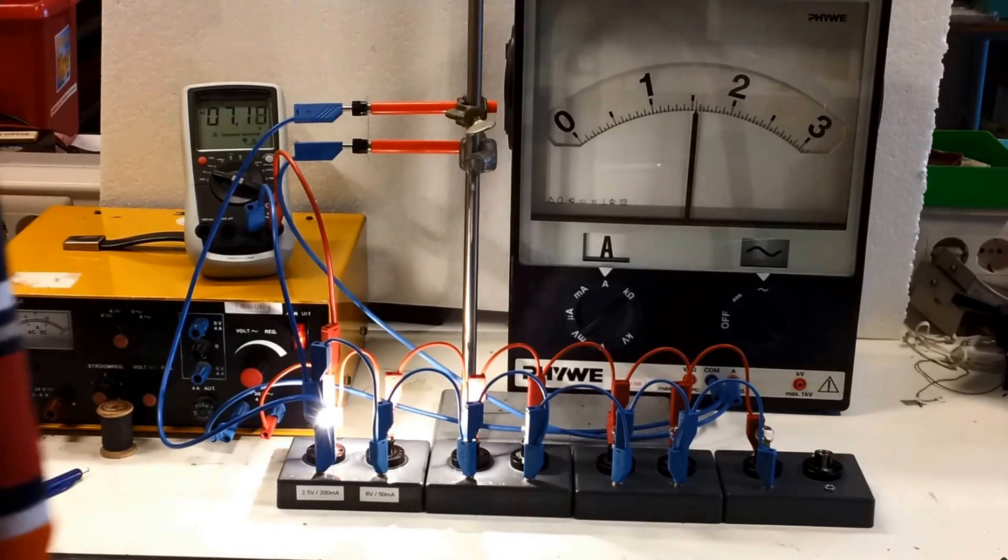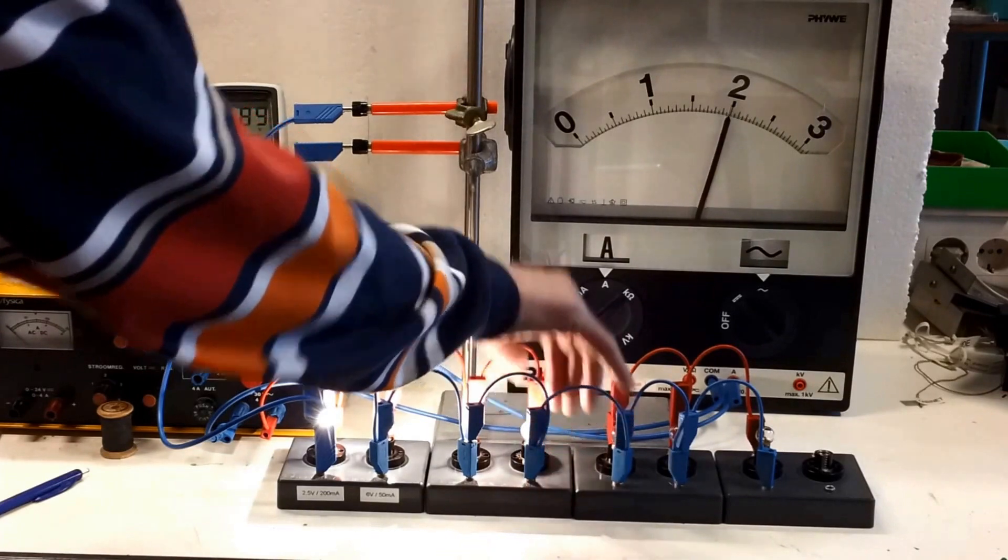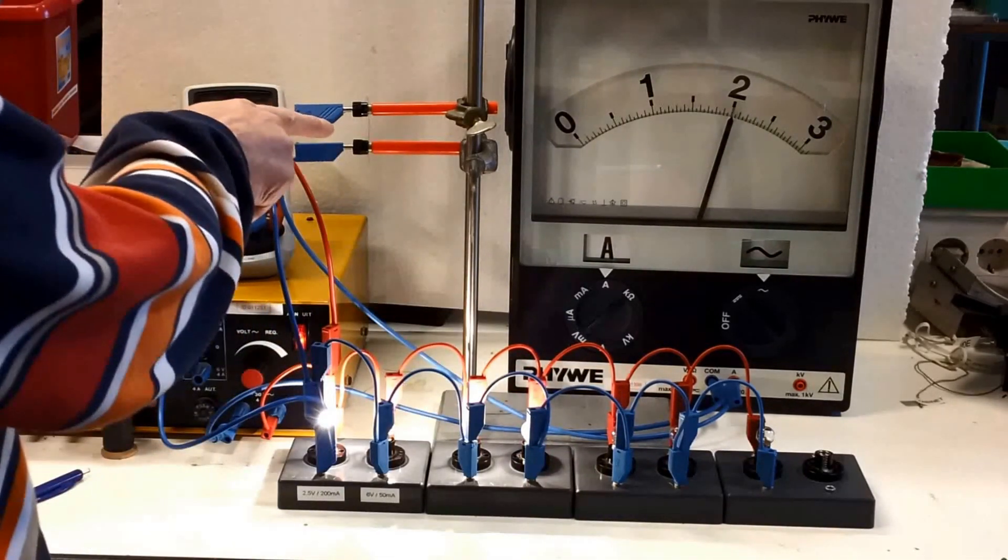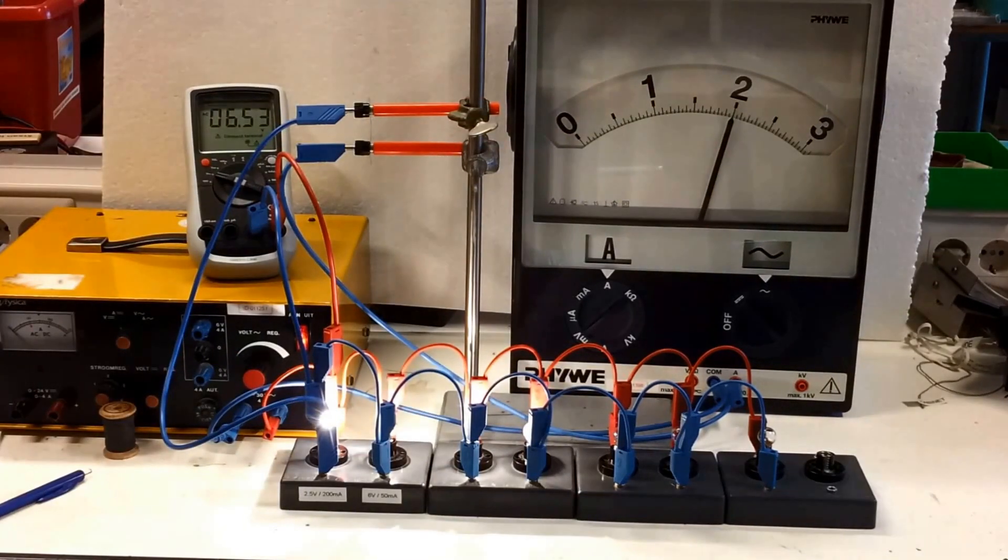But some dishes are getting dirty, so you also need a dishwasher. Switch on the dishwasher, still no problem. The fuse can still handle it, and the current is still going up.